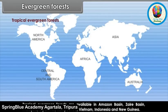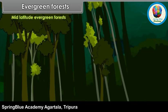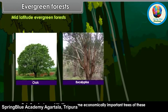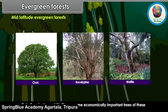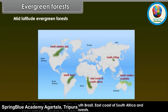Tropical evergreen forests are available in the Amazon Basin, Congo (Zaire) Basin and Malaysia. Mid-Latitude Evergreen Forests: These forests are found on the eastern margins of continents. They contain hardwood trees with broad leaves. Oak, eucalyptus and wattle are some economically important trees. South China, Southeastern USA, South Brazil, East Coast of South Africa and Southeastern Australia have such forests.